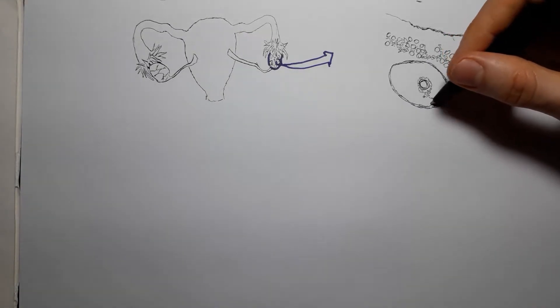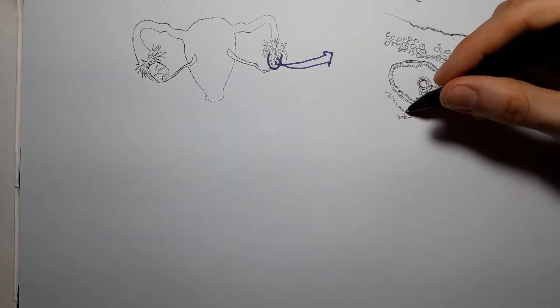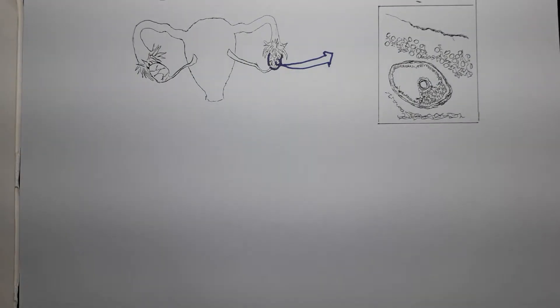Here you can see a slice of a follicle. You can see the oocyte right in the middle, surrounded first by the granulosa cells and then by the theca cells.